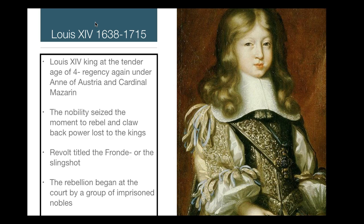Louis the 13th died in 1638 and Richelieu himself died in 1643. At the time of Louis's death, France was constantly near bankruptcy, yet had emerged as the most powerful nation state in Europe. By 1648 with the defeat of the Habsburgs in the 30 Years War — both the Austrian and Spanish branches — France stood as the dominant power in the European state system.